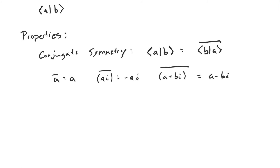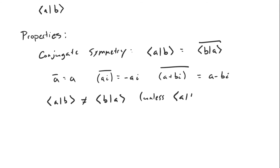So in general the inner product of a and b is not equal to the inner product of b and a — unless the inner product of a and b is a real number, in which case its complex conjugate is itself. So in that case these two inner products are the same.